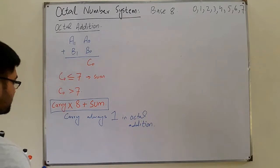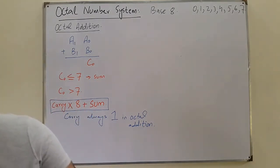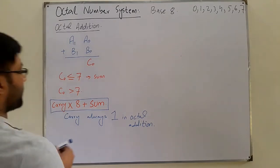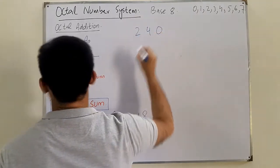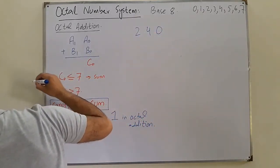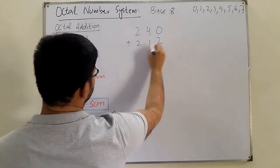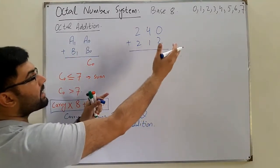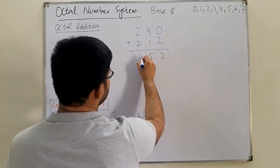Let's understand this through examples. First example without a carry: 240 plus 212. Since all of these numbers are included in the octal number system, 0 plus 2 is 2, 4 plus 1 is 5, 2 plus 2 is 4. The answer is simply 452.